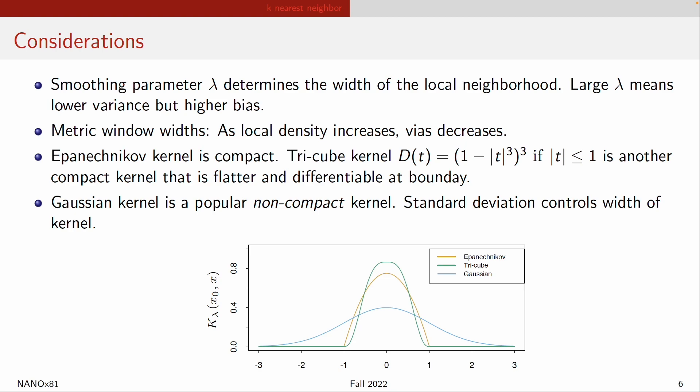The Epanechnikov kernel is one of the most commonly used. It is quite compact. There is also another kernel called the tricube kernel — tricube because it is (1 minus t cubed) to the power of 3. It is another compact kernel, meaning it actually goes to zero at some finite value. The tricube kernel is a bit flatter and is also differentiable at the boundary.